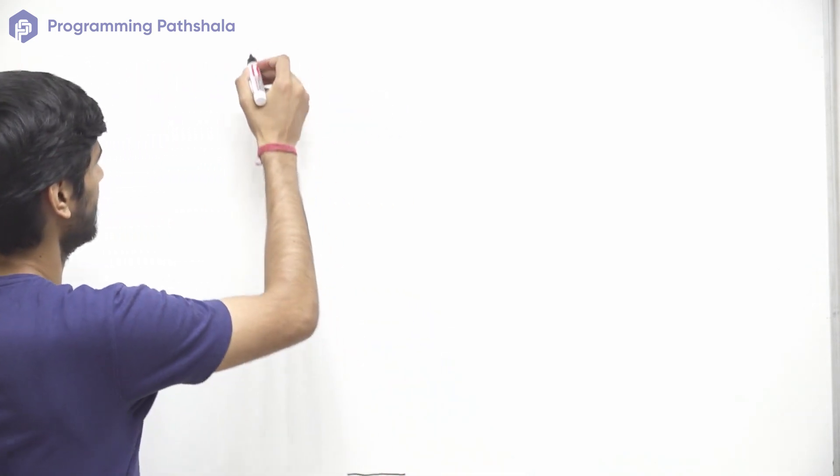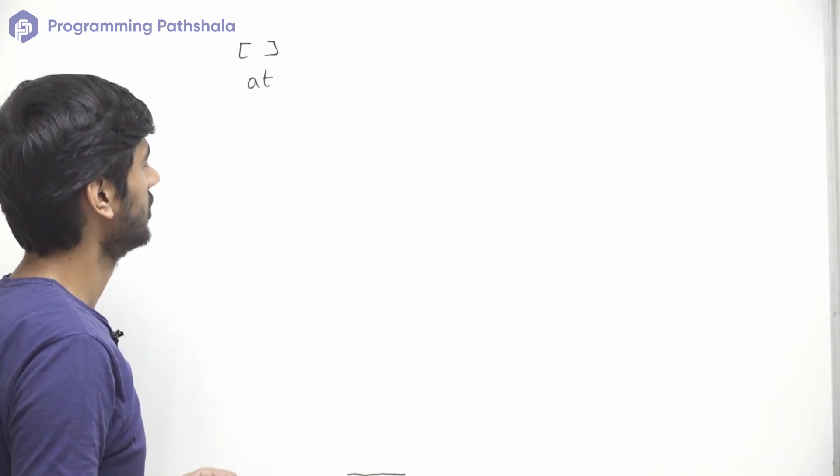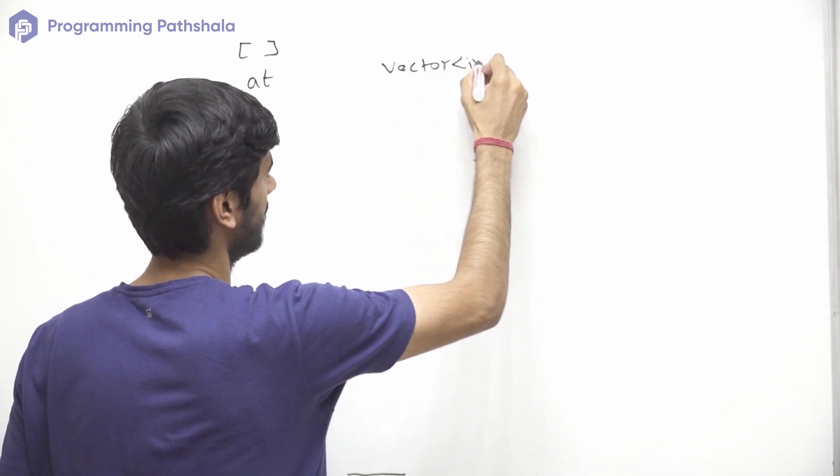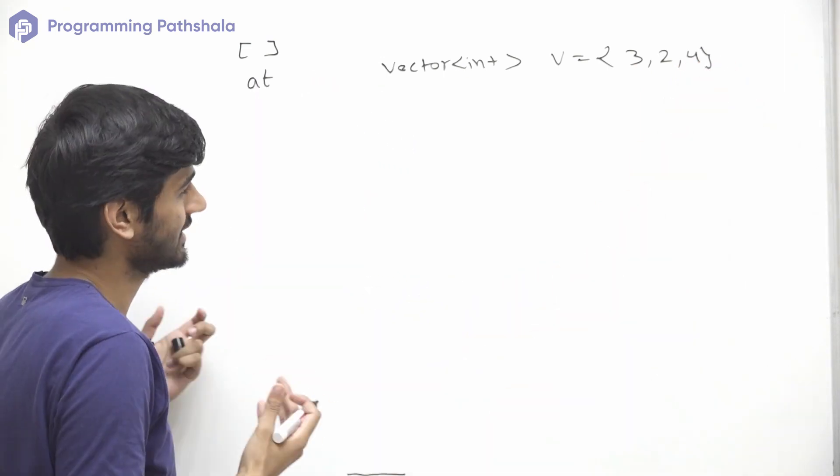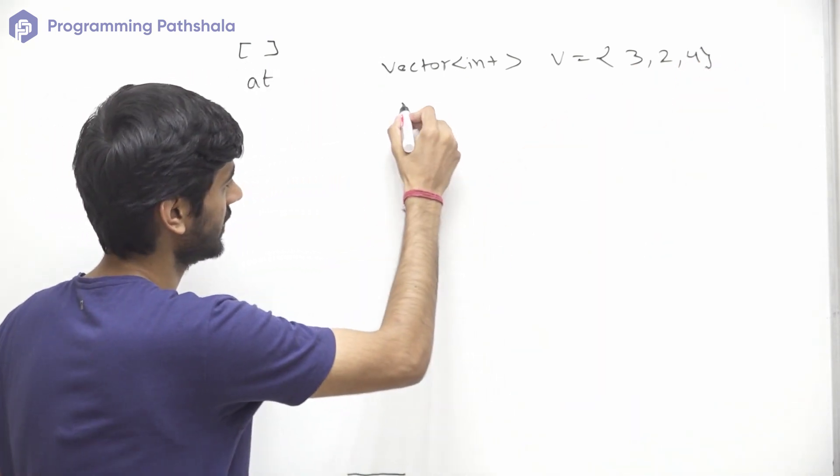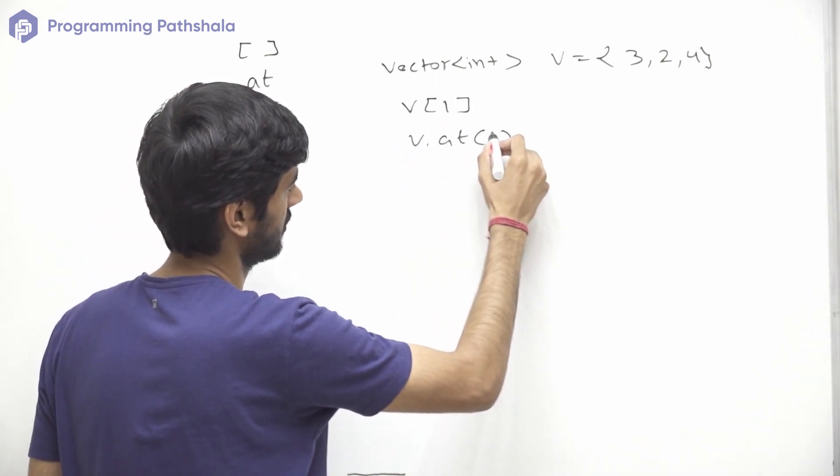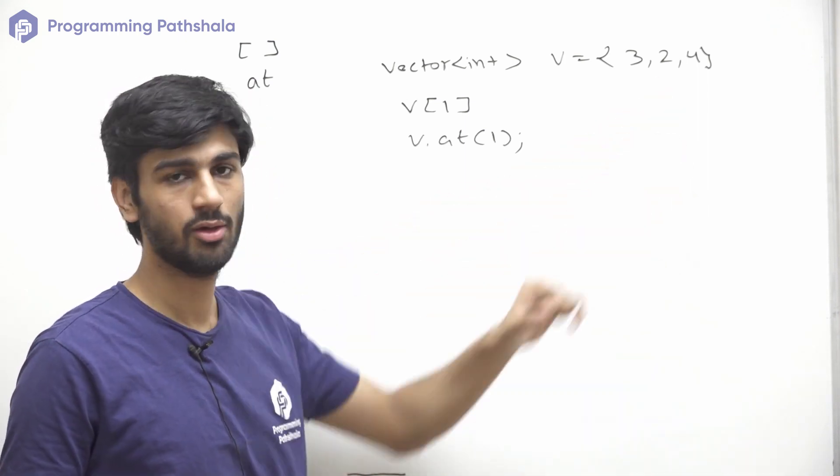Now let us see how we can access elements from a vector. For that we mostly use two operators. First one is the square brackets operator and the second operator is the at operator. Using both of these operators, we can access element present at a particular index. For example, let's say we have this vector. If we want to access the element present at first index, then we can do that using this or using this.